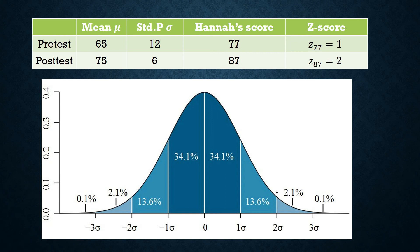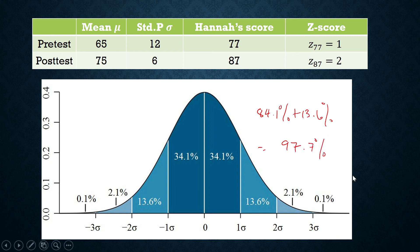How about in the post-test? Where is 2? This post-test has a Z-score equivalent to 2. Since the Z-score of 87 is 2, that means her score in the post-test is two standard deviations from the mean. It also means that her score is better than 97.7% of the class. So Hana did exceedingly well in the post-test. In the pre-test she was better than 84.1% of the class, but in the post-test she was better than 97.7% of the class.